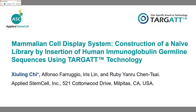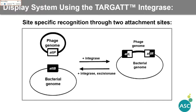Serine integrase is a recombinant enzyme that can drive unidirectional recombination between a phage attP site and a bacterial attB site. Here we utilize a target integrase, which permits both high efficiency and high fidelity recombination in mammalian cells.